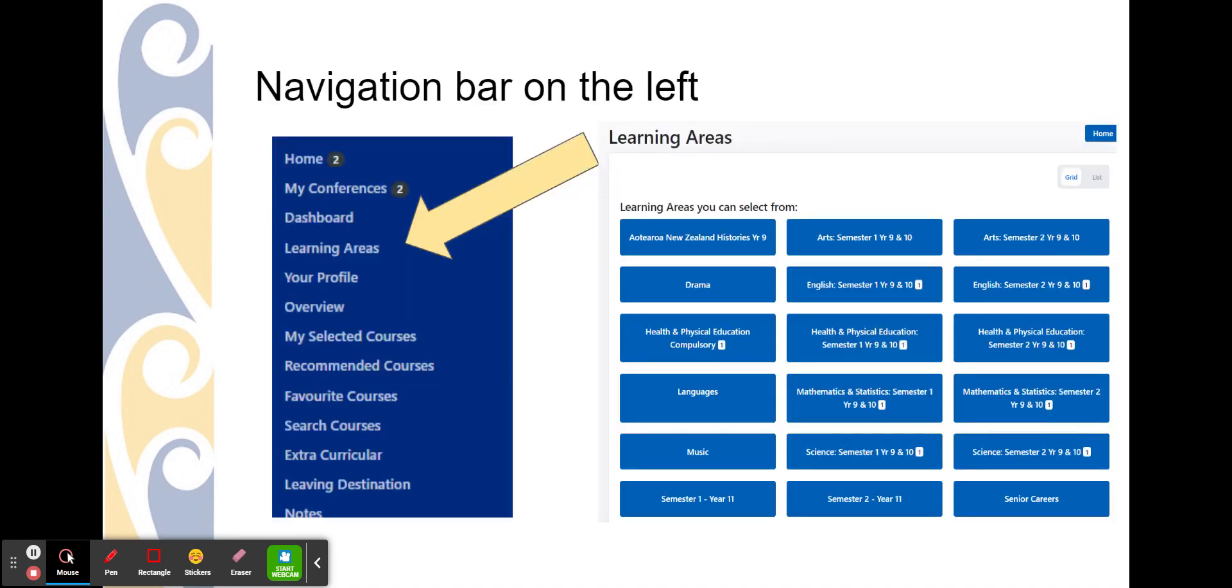On the left hand side, there's a navigation bar. Click on learning areas and this will bring all of the learning areas you can choose from.